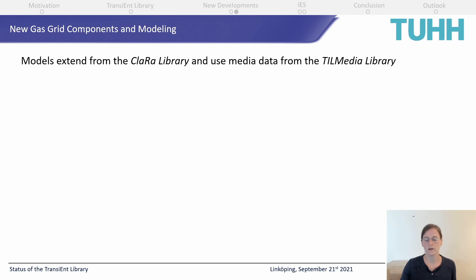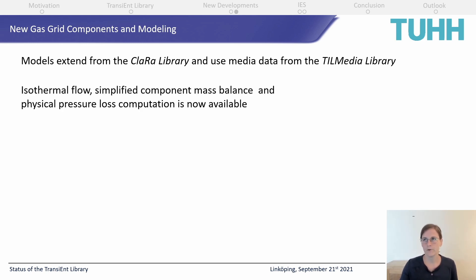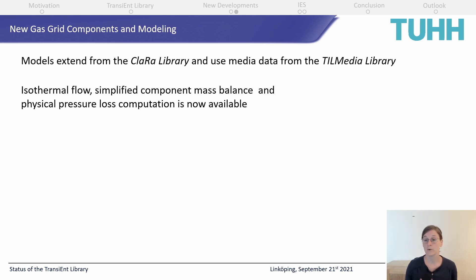Looking at the simulation and computation improvements: first, on the energy balances, we now have an isothermal flow available, which helps reduce the complexity of the energy balance and is suitable for large regional gas grids. We also simplified the component mass balance, especially when hydrogen is mixed into the gas grid. Additionally, we added a physical pressure loss computation, which enormously reduced computational complexity and enables us to model and simulate those large gas grids.